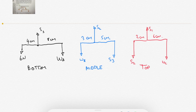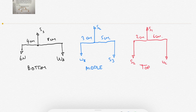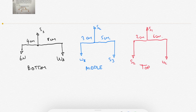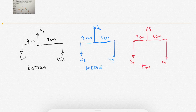The free body diagram for the bottom rod has the 6 newtons and WA hanging downwards, balanced by S3 pointing upwards. For the middle rod, it's pulled down by S3 at a distance of 5 centimeters on the right, and by WB at a distance of 3 centimeters on the left, supported by string S2 pointing upward. For the top rod, it hangs by string S1, with S2 pulling downward 2 centimeters to the left and WC pulling downward 6 centimeters to the right.